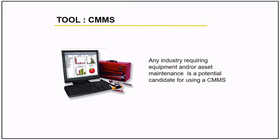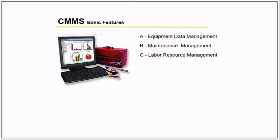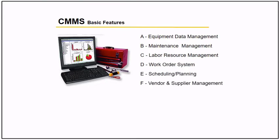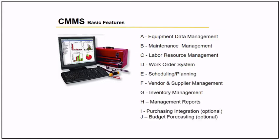Your tool, which is the CMMS — actually any industry requiring asset maintenance is a candidate for using CMMS. There are lots of software out there: SAP PM, Mapcon, E-Maintenance, Micromaine, C-Works, Asset Management. But I will discuss the basic features you need for a CMMS before you select one. The basic features are: equipment data management, maintenance management, labor resource management, work order system, scheduling and planning, vendor and supplier management, inventory management, reports management, and others like integration.